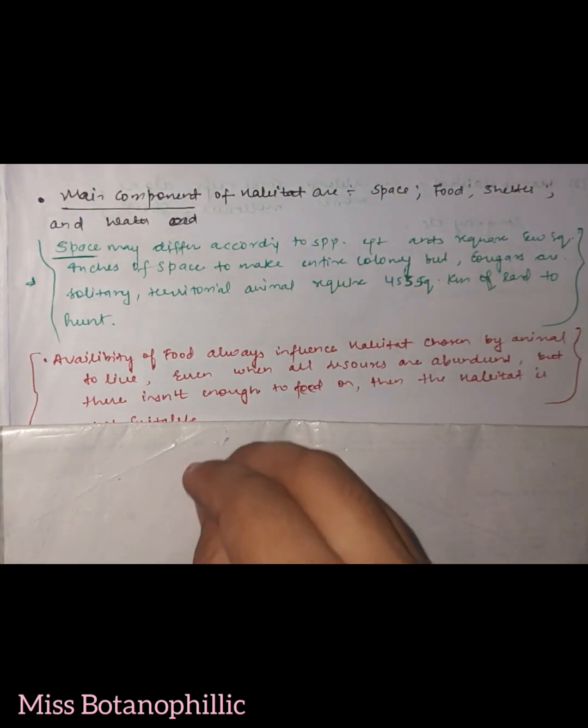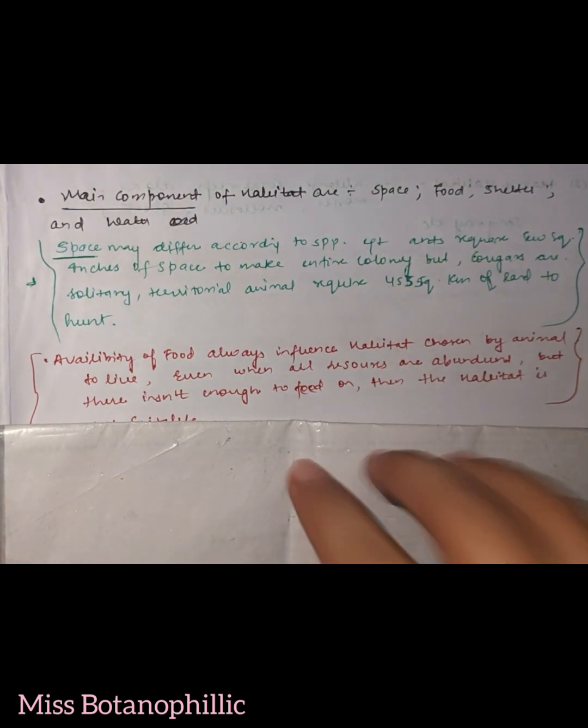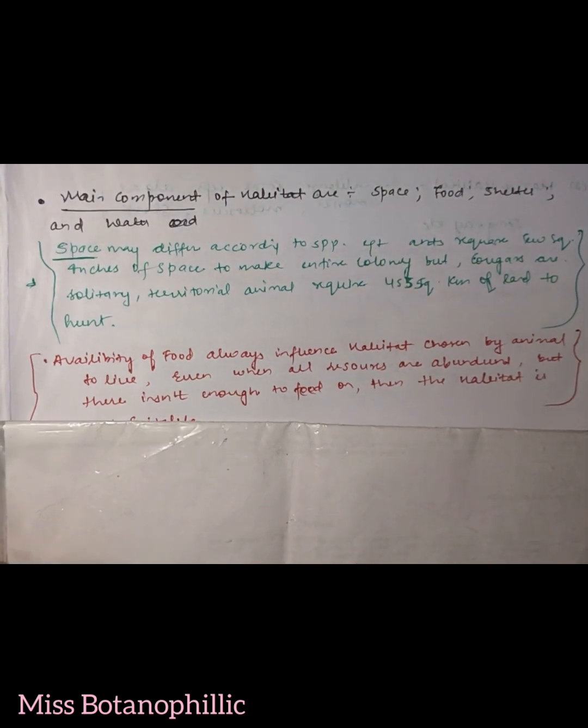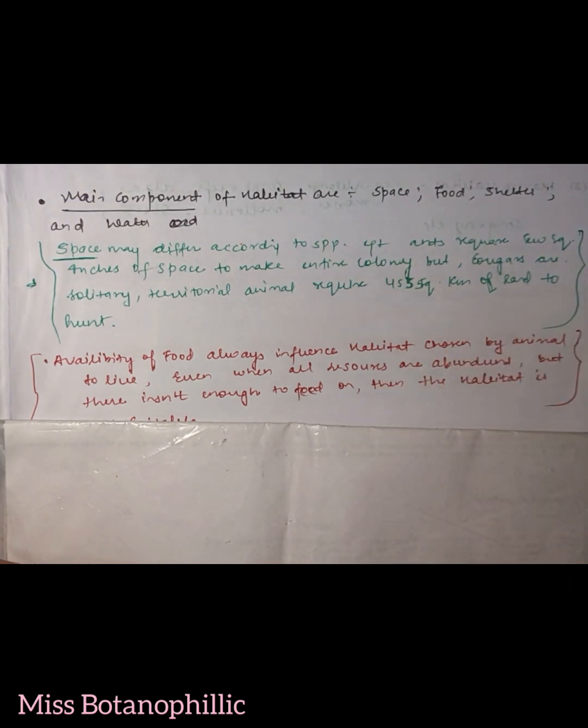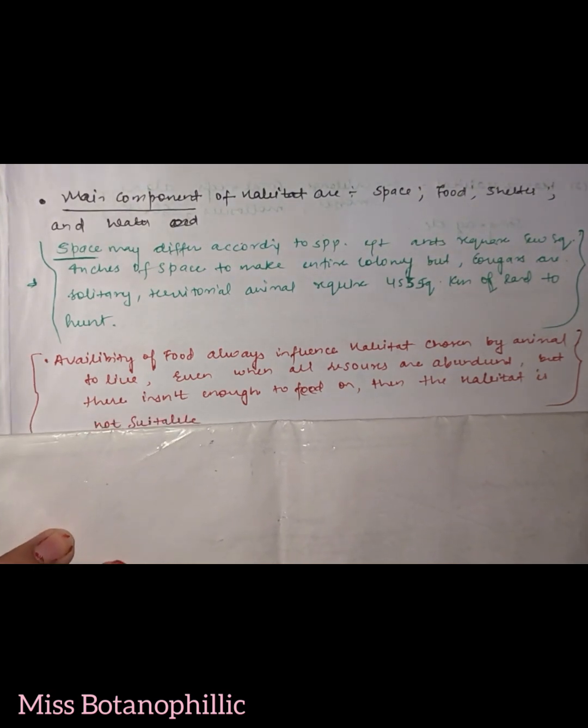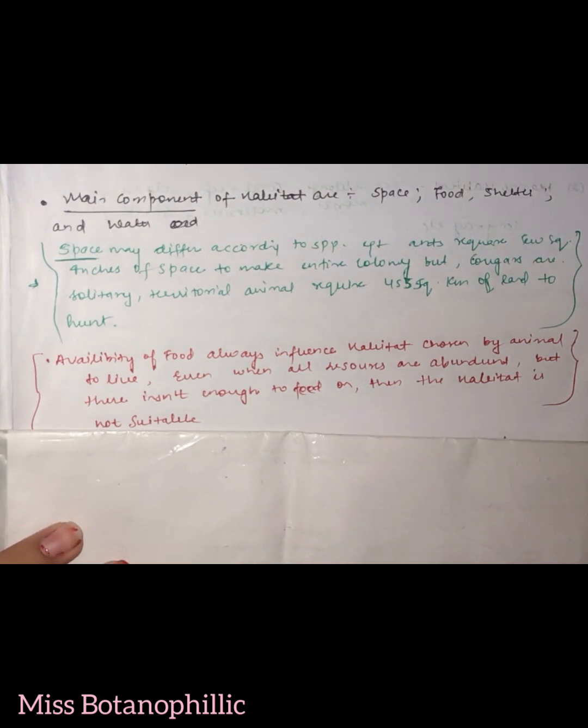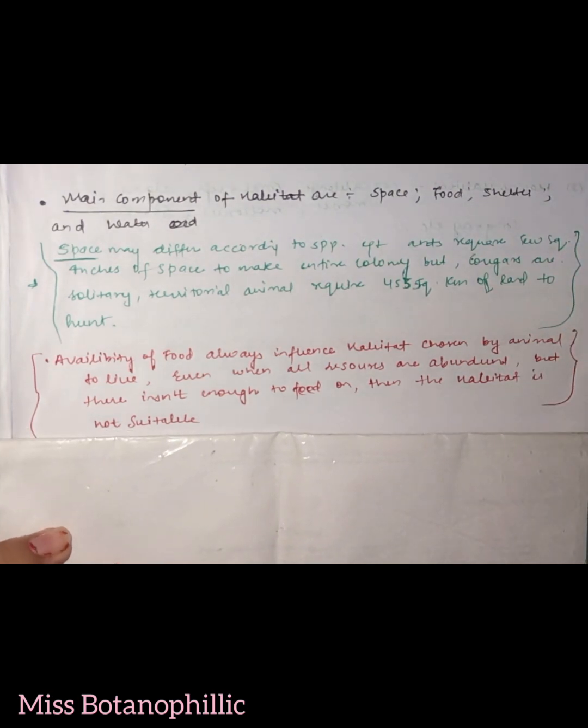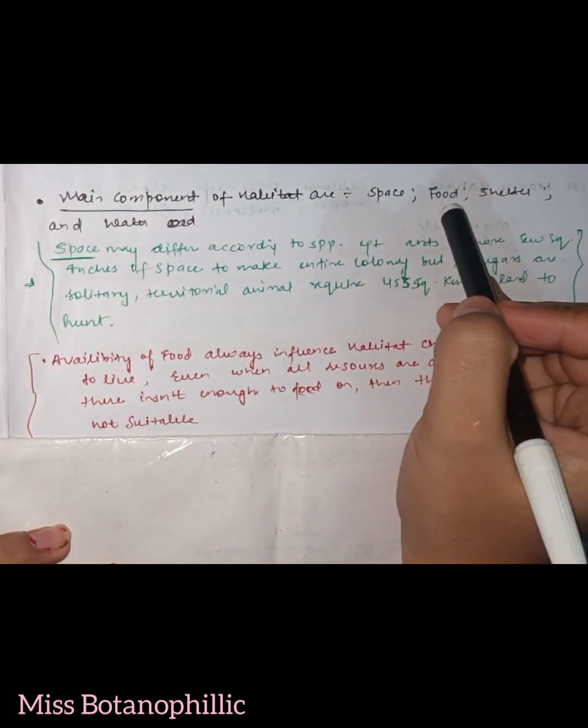if in the habitat where it is living there is no food, or food supply is very less, then what happens is that intraspecific competition starts happening. They start competing with each other, which we call intraspecific competition. So this can be a disadvantage. So this is what is said about habitat - that no matter how many components a habitat has, the most important component is food.